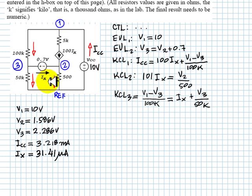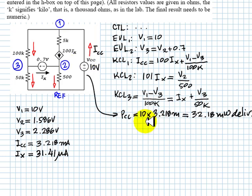Now we compute the powers. The power here is 10 volts times ICC, 10 times this, that is 32.18 milliwatts, 32.18 milliwatts delivered because of the direction of the current and its positive current flowing from low to high voltage. Do not forget to write that the power is delivered power.